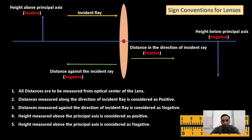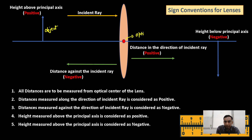The first rule is you are always supposed to keep the object on the left-hand side of the lens. We have this blue color arrow as an object which is kept on the left-hand side of the optical center of the lens. So, object always on the left-hand side of the lens.